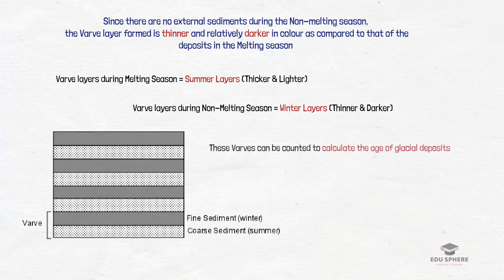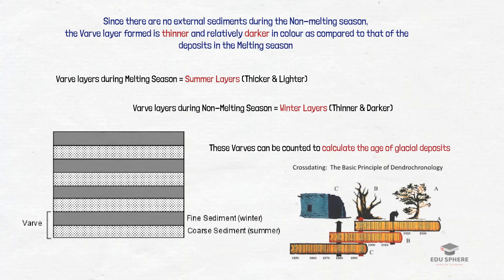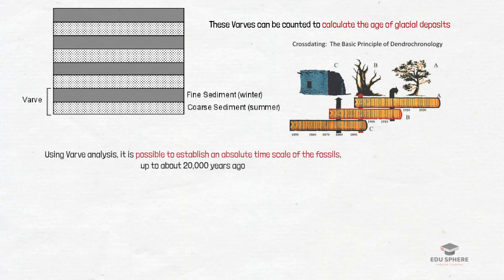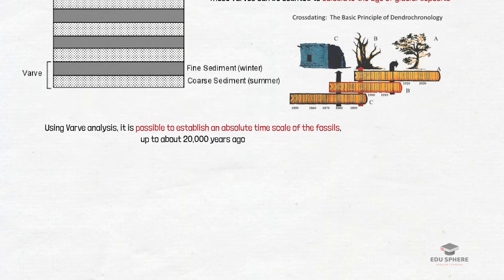These varves can be counted to calculate the age of glacial deposits using the same principle as that of dendrochronology. By counting varves it is possible to establish an absolute time scale of the fossils up to about 20,000 years ago.